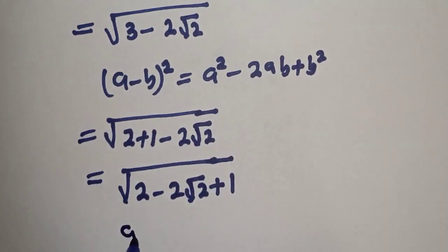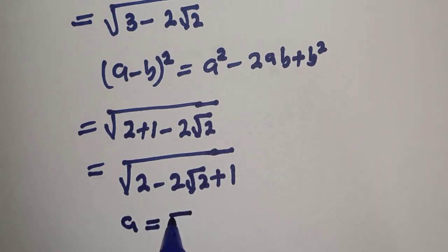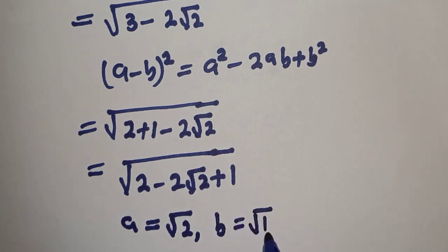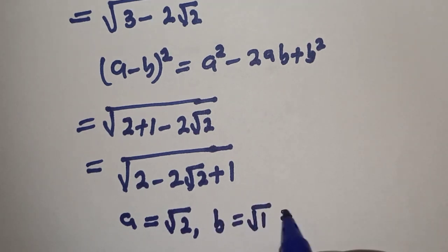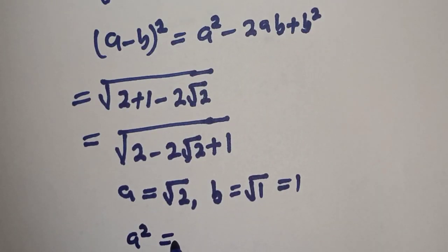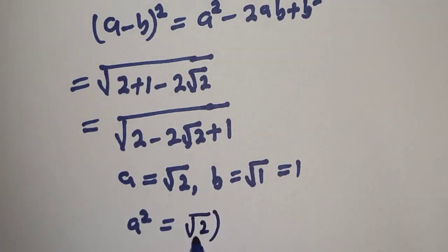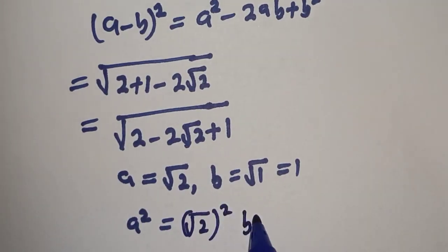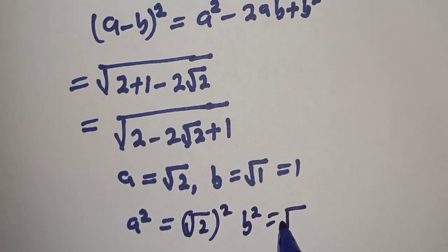From here, a is equal to √2, then b is equal to square root of 1 which is also equal to 1. And then a² is equal to (√2)² and b² is equal to (√1)².